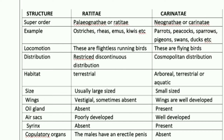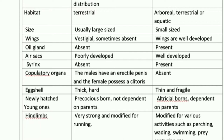For habitat, Ratitae are terrestrial — living on land. Carinate are arboreal or aquatic — living in trees or water. All three habitat types fall under Carinate. For size, Ratitae are generally larger compared to Carinate, which are smaller in size.